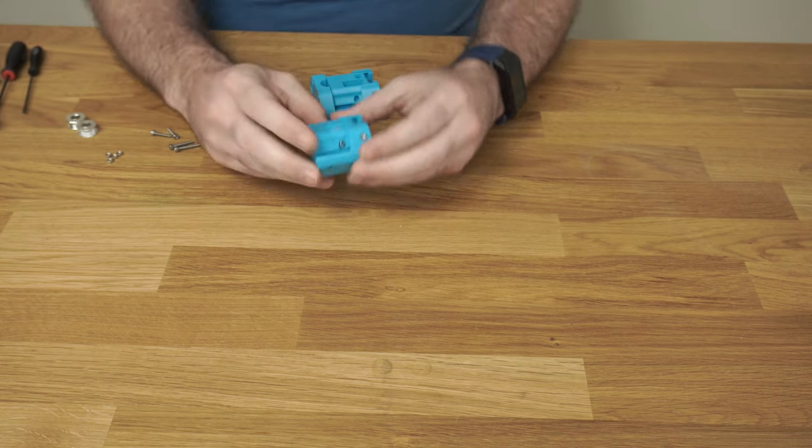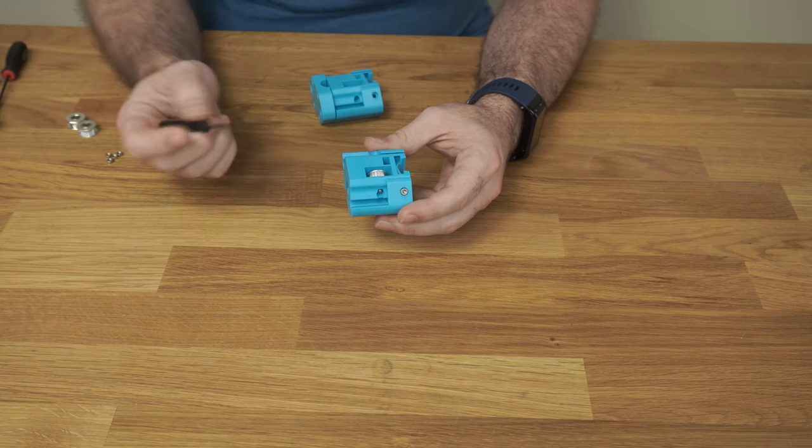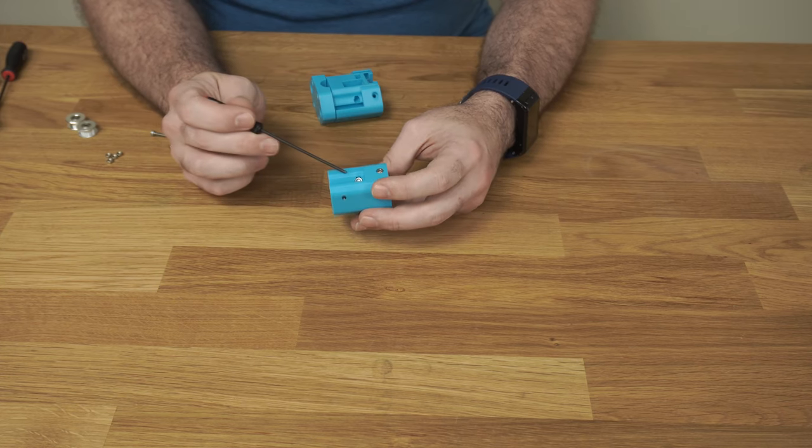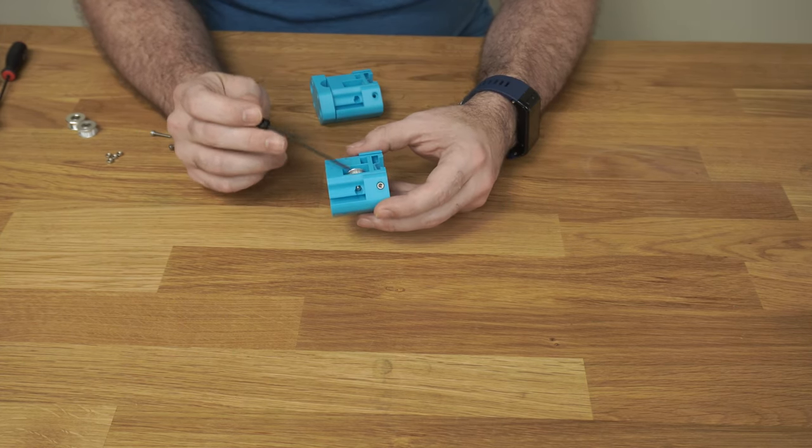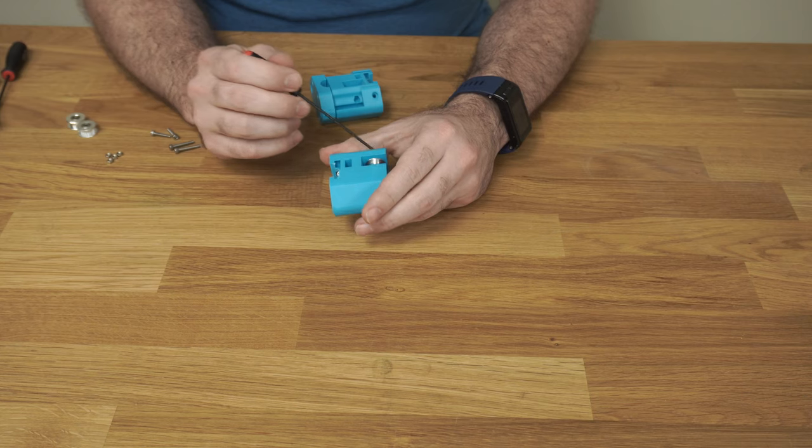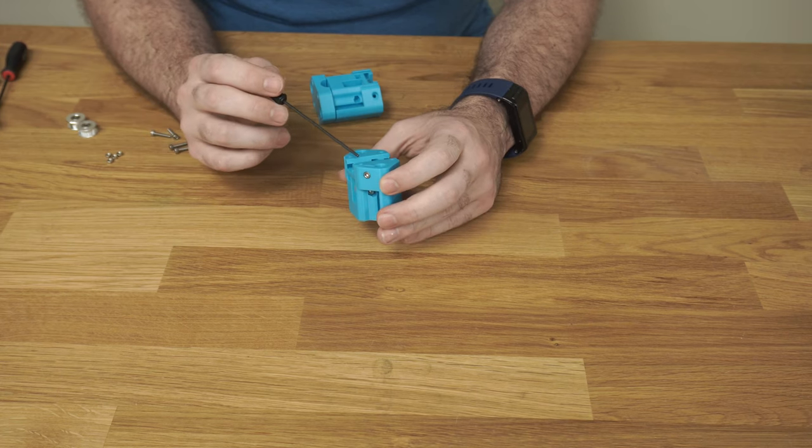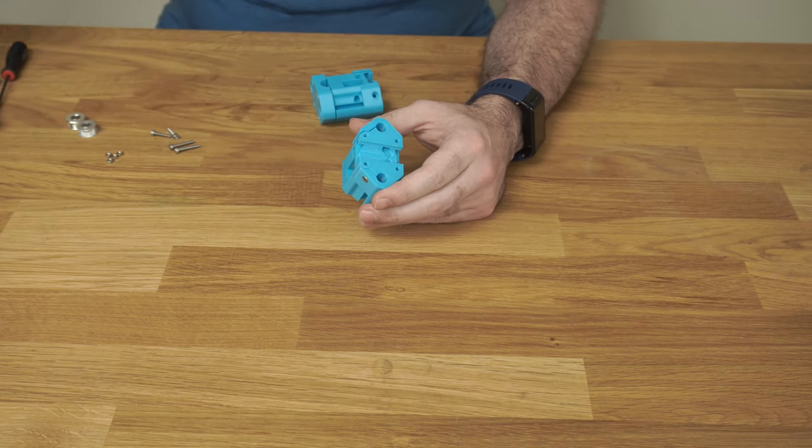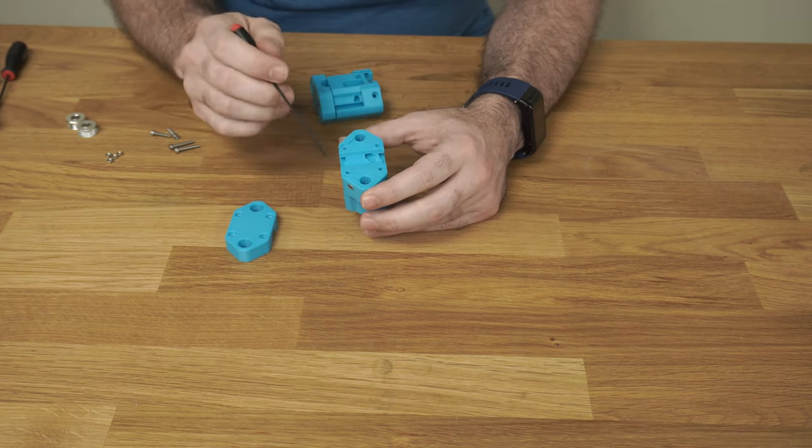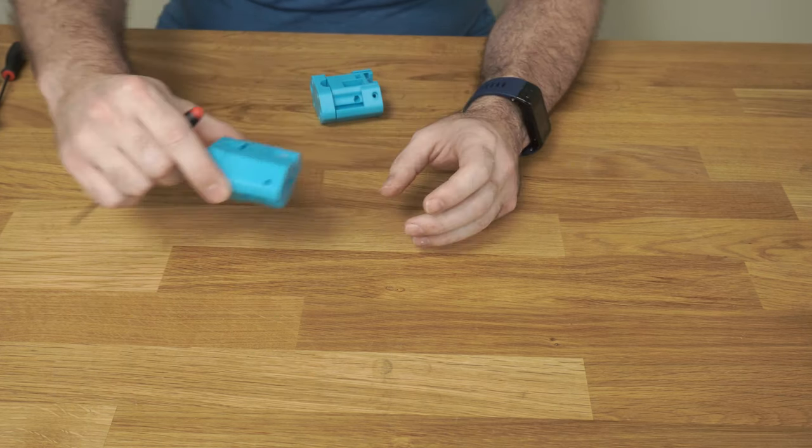So now we're going to put together the Y carriage. This is one that I already assembled—I made a few changes on the Y carriage. First of all, I got rid of all the heat inserts. Everything is nut captured now, so there's a captured nut holding in the pulley here—the tooth pulley—and there's a captured nut inside here holding in the smooth pulley. There's also captured nuts to hold on the end cap like this, so there's four more captured nuts here, and those all slide in this way. I'll go ahead and assemble the other one.